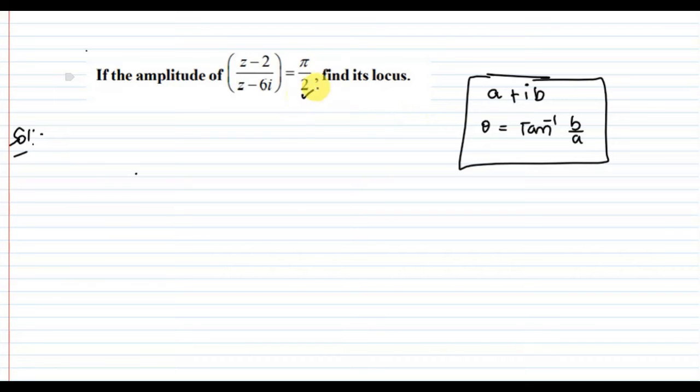This value in the equation is π/2, which is 90 degrees. Now, let us consider z as a complex number. Let z equal x + iy. Now let's work on this and then talk about the amplitude.